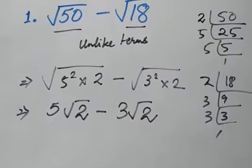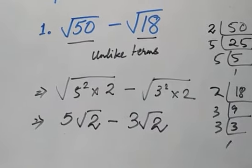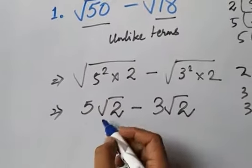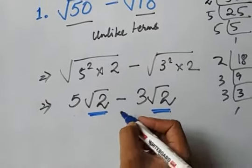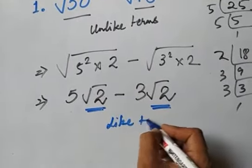And now when you see this, the roots are no longer unlike. Because this is also root 2, this is also root 2, these are now like terms.